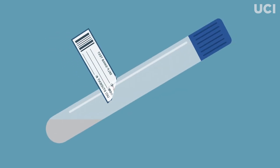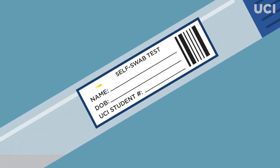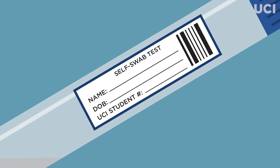Step 1. Check if the label on the transport tube has your correct name, date of birth, and UCI student number.